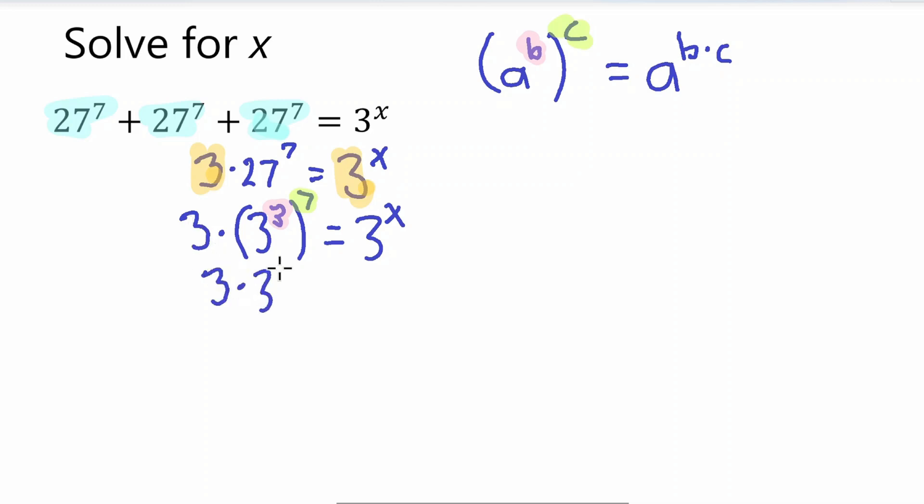So we can rewrite this as 3 times 3 to the 21 is equal to 3 to the x. And now, let's see if we can combine these terms, the 3 times 3 to the 21. Let's see if we can combine that.